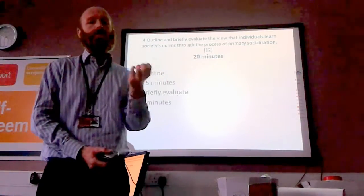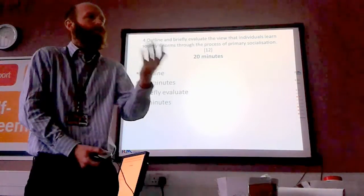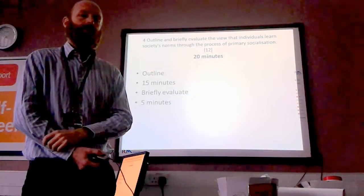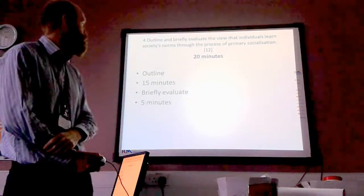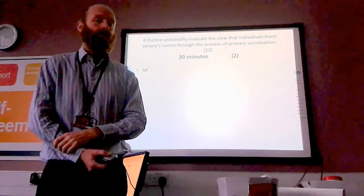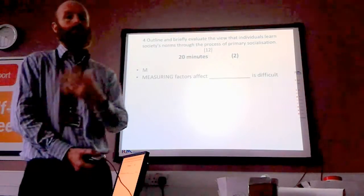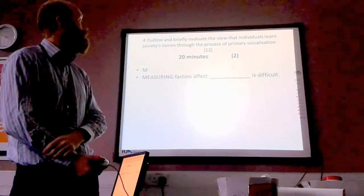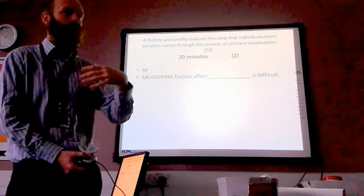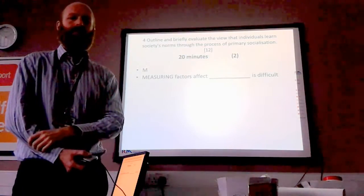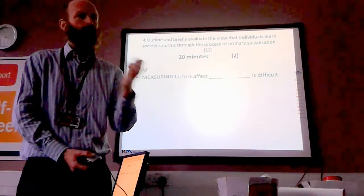Whatever the view is in the question, you've got to discuss the problems with it in a small paragraph at the end of the essay. This is different to a longer essay, because you're giving a brief evaluation. In essays later on you'll be doing more substantial evaluations. There is a way of structuring this evaluation paragraph, which is M-O-I-P. Firstly, M: you can say it's difficult to measure the factors that affect the learning of norms — the topic in question — and the difficulties with that process.